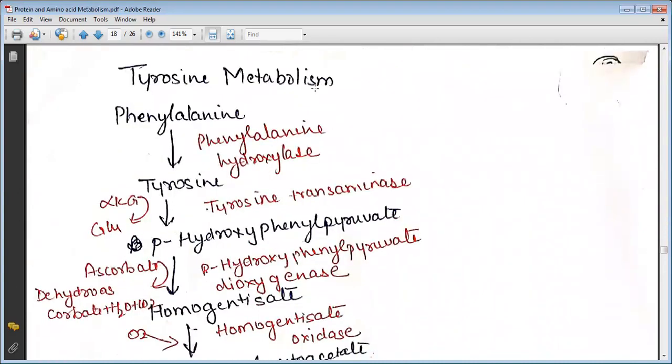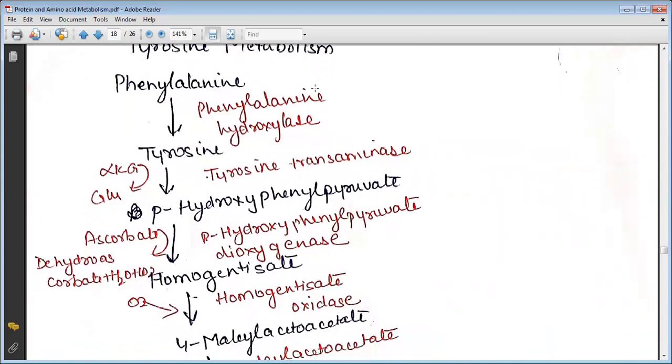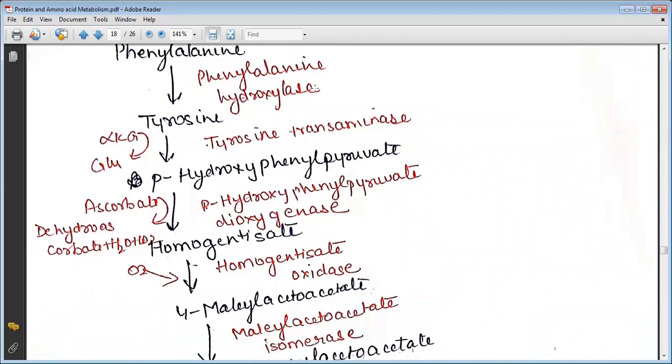Phenylalanine, in the presence of phenylalanine hydroxylase, changes to tyrosine. Tyrosine aminotransferase changes tyrosine to para-hydroxyphenylpyruvate. Para-hydroxyphenylpyruvate dioxygenase changes para-hydroxyphenylpyruvate to homogentisate. This homogentisate is changed into maleylacetoacetate in the presence of homogentisate oxidase.